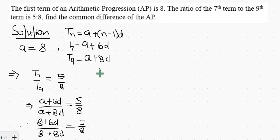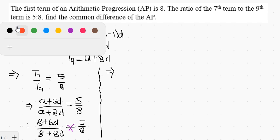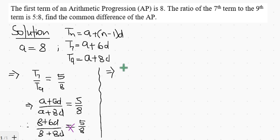So with this, by cross multiplication, we would have 8 times 8 plus 6d equal to 5 times 8 plus 8d.